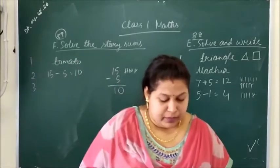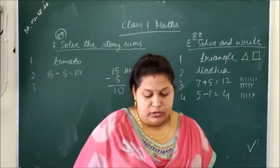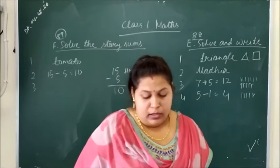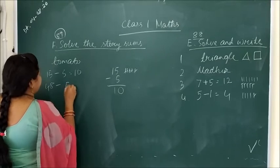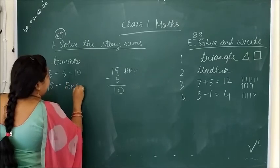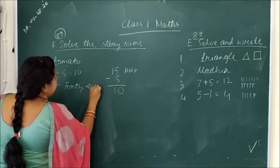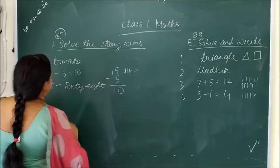Question number 3. There are 48 tomatoes. Write the number name of 48. 48 number name is F-O-R-T-Y, then 8, E-I-G-H-T. Forty-eight.